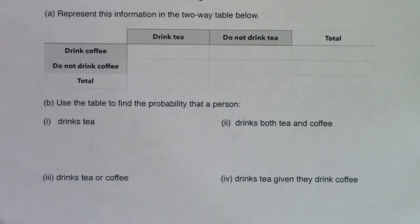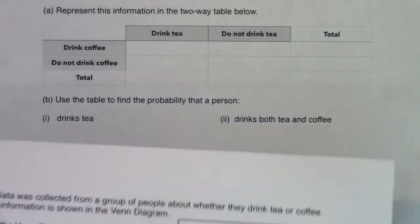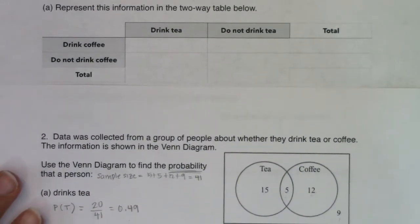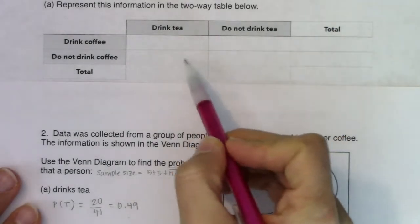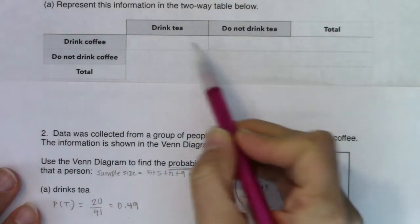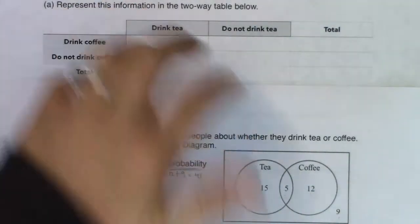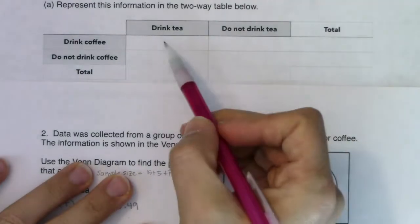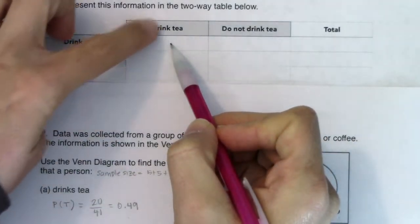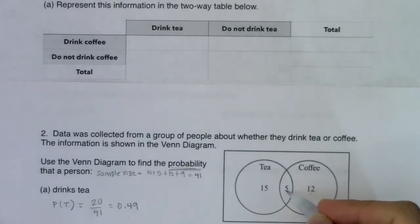I'm going to bring my old Venn diagram from number two right up here so we can see both. There are four numbers in our Venn diagram, and we need these four numbers — not in the totals, not in the column or row totals — but these four cells need to get filled in. There are always these four regions whether you're looking at a tree, a Venn, or a table. If I put my pencil in this first cell, I drink tea and I drink coffee — that's the folks that do both.